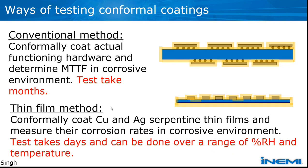Under high temperature conditions, the conformal coating can behave very differently from that under application temperature conditions. The method for this presentation - let's call it the thin film method - uses serpentine thin films of copper and silver coated with the conformal coating under test. We then expose these coated thin films to a corrosive environment and measure the corrosion rates. If the coating is perfect, the films will have zero corrosion rate. The advantage is it can be done in one week at different temperatures and humidity levels.